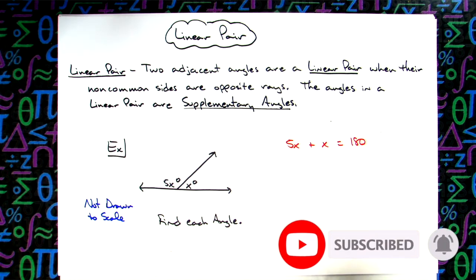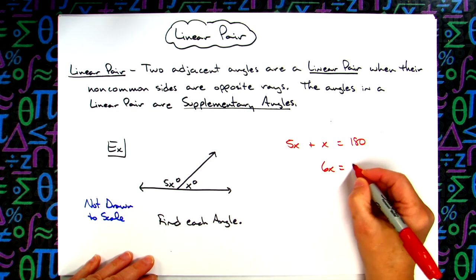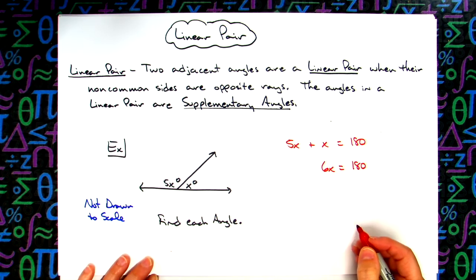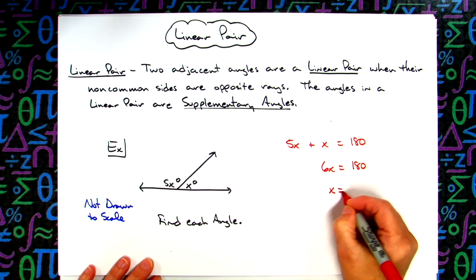Then we have written an equation which we can solve. If I combine like terms on the left hand side, we'll have 6x equals 180. Going ahead and solving that one step equation, dividing both sides by 6, we'll have x equals 30.